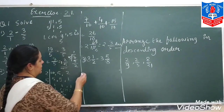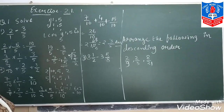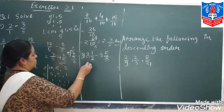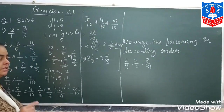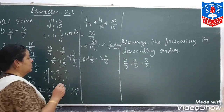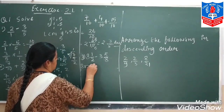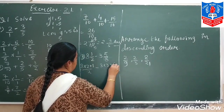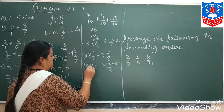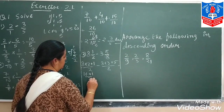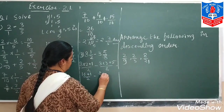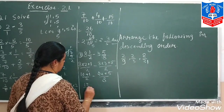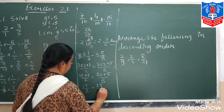Then the third sum involves mixed fractions. So we convert them first into simple fractions. 8 and 2 gives 8 into 2 equals 16, plus 1 is 17 by 2. The second mixed fraction: 8 into 3 equals 24, plus 5 is 29 by 8. So the expression becomes 17 by 2 minus 29 by 8.